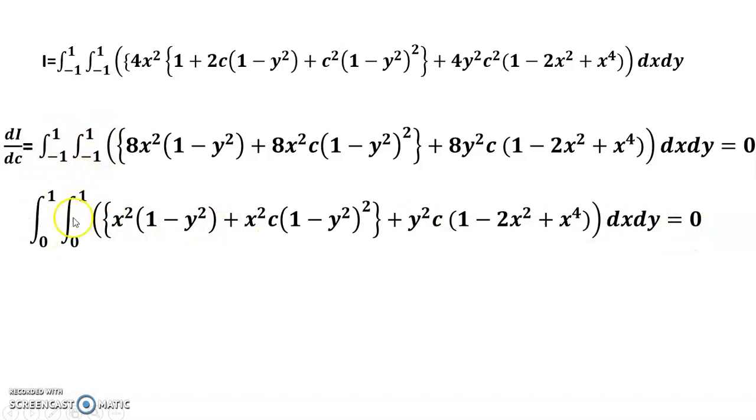From -1 to 1, -1 to 1 becomes 0 to 1, 0 to 1, times 2 times 2 equals 4, because all are even functions, so I took everything in here.